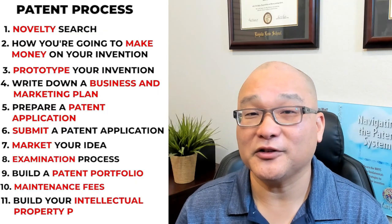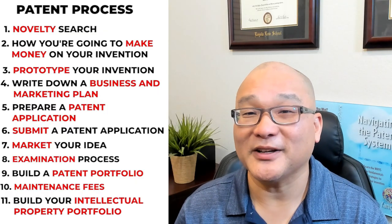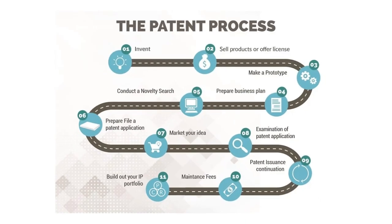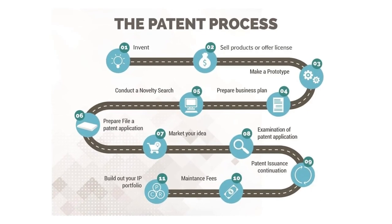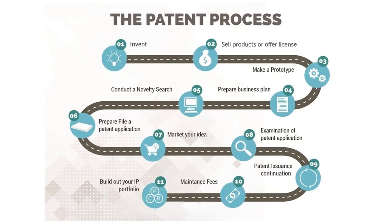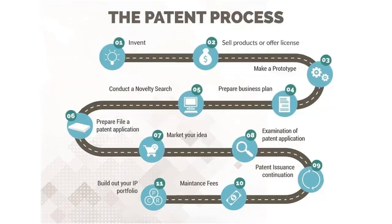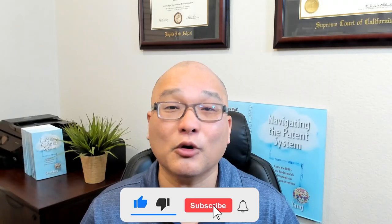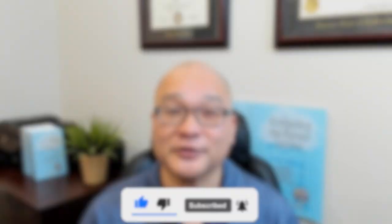Finally, the eleventh step is to continue building your intellectual property portfolio, which includes securing trademarks and copyrights around your product. By following these steps, you're building a fence — a really high fence — around your business so that you can be more profitable in the future.